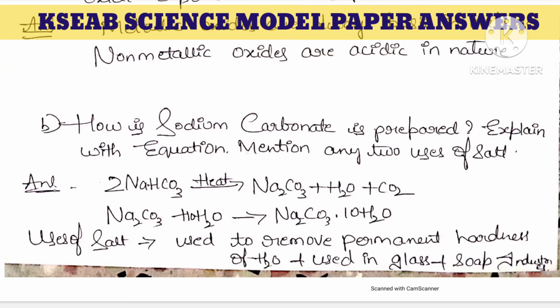How is sodium carbonate prepared? When we heat sodium bicarbonate (NaHCO3), we get washing soda (Na2CO3) along with water and carbon dioxide. With 10 molecules of water we get hydrated washing soda. Uses: it is used to remove the permanent hardness of water, and it is also used in the glass and soap industries.